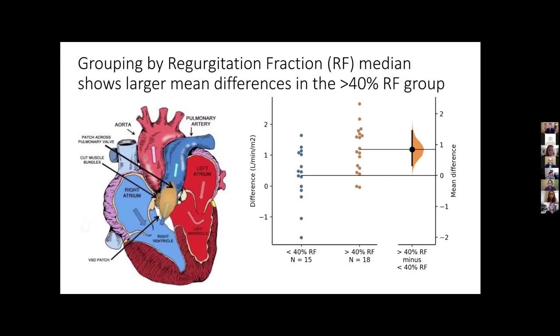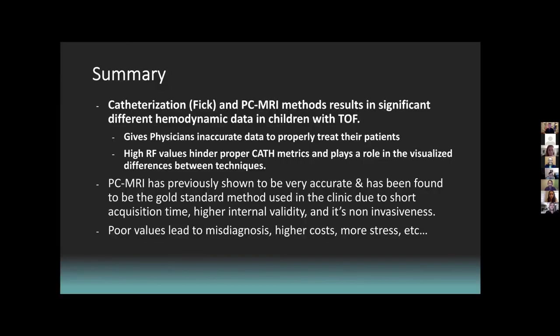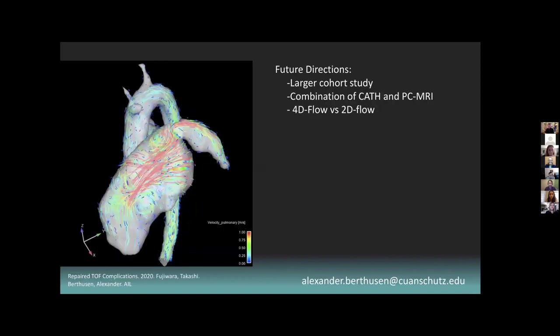To summarize, FIC and PCMRI methods result in significantly different hemodynamic data in children with Tetralogy of Fallot, which we found p-values that were significant for all of this data. This gives physicians inaccurate data to properly treat their patients. They need accurate flow and pulmonary vascular resistance to understand their patients. High IRF values hinder proper cath metrics in visualizing the differences we've seen. Basically, previous research has shown PCMRI to be the gold standard based on its acquisition time, high internal validity, and its non-invasiveness.